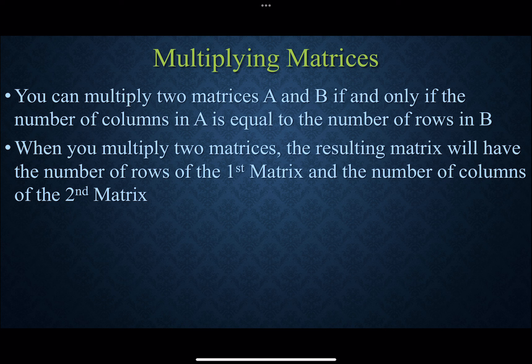So the columns of the first matrix have to match the rows of the second matrix. Because A times B versus B times A gives two different answers. Sometimes you might be able to do A times B but not B times A, so you have to be very careful about order. You always want to identify the size of the matrices first to determine if you can actually multiply them, otherwise you're going to waste time.